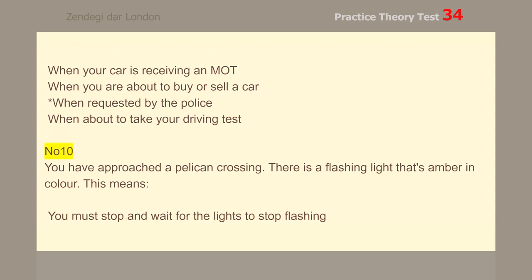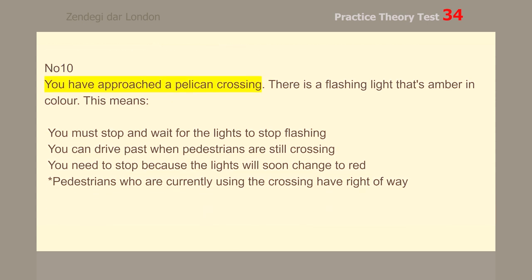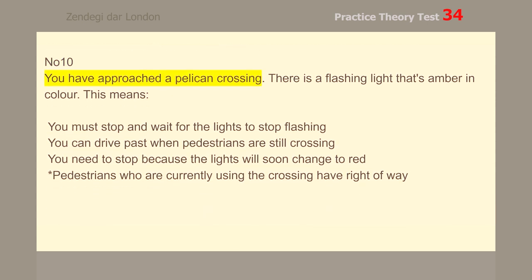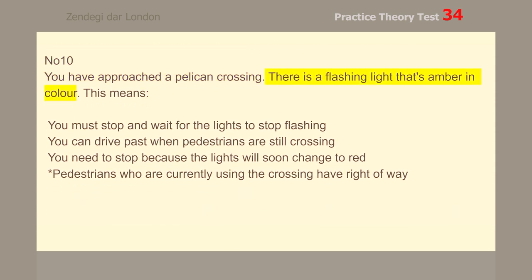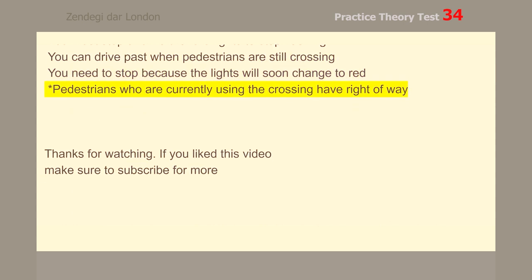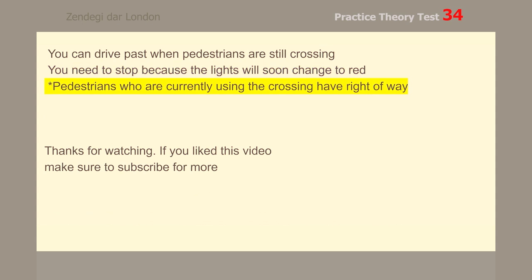Number 10. You have approached a pelican crossing. There is a flashing amber light. This means pedestrians who are currently using the crossing have right of way.